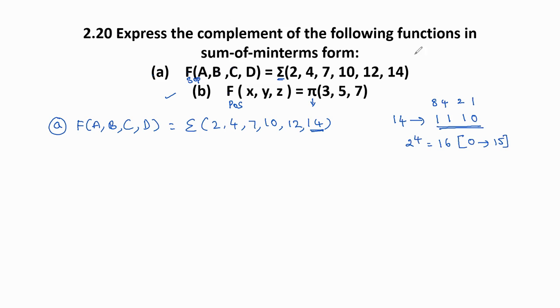To find the complement of the Boolean function in sum of minterms form, write f'(A,B,C,D). This is in SOP form, which equals sigma. The missing minterm numbers are complemented values. So the complement of the Boolean function gives the missing numbers from 0 to 15.